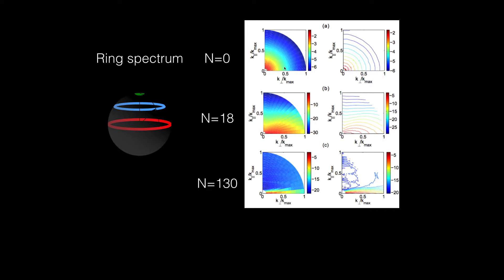For N equal to zero, with no magnetic field, the flow is isotropic. Same for all theta. All rings have same energy when normalized.